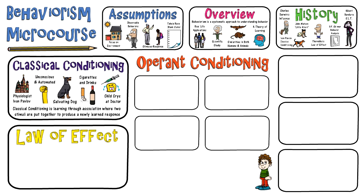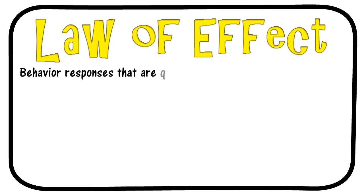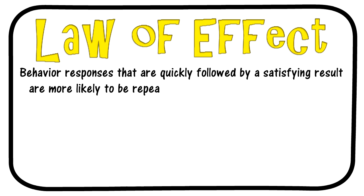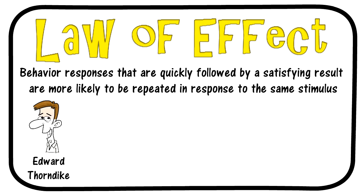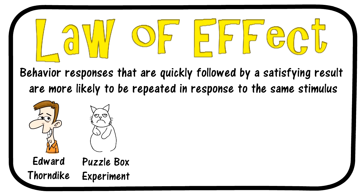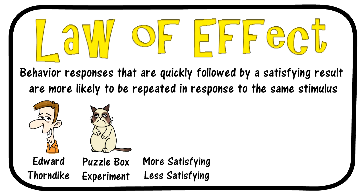The next topic is the law of effect. It describes how behavior responses that are quickly followed by a satisfying result are more likely to be repeated in response to the same stimulus. Edward Thorndike is responsible for developing this principle. He studied learning in animals and is responsible for the puzzle box experiment, where a cat was placed in a maze and if it pressed the correct lever to escape, it would get food. Thorndike noticed after successive trials that the cat would increasingly press the lever faster. The cat learned from positive, satisfying responses. Any behavior followed by a pleasant response is more likely to happen again; any behavior immediately followed by an unpleasant response is less likely to occur in the future.